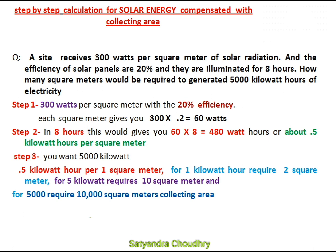We will solve this question step by step. In the first step, we will calculate the total amount of energy generated with its efficiency. Given data is 300 watts per square meter with an efficiency of 20%, so each square meter will give us 60 watts per hour.